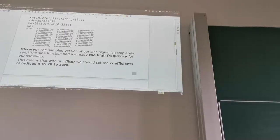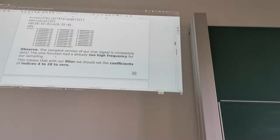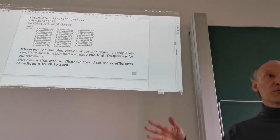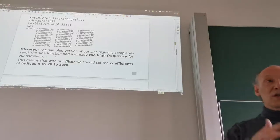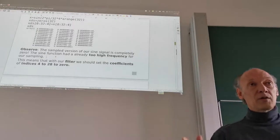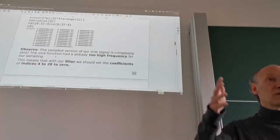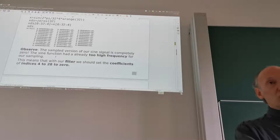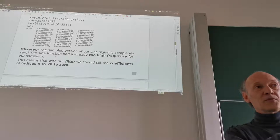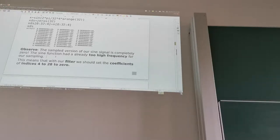The signal frequency was already too high for our new sampling rate because the sinusoid was exactly at the Nyquist frequency for the new sampling rate. The new sampling rate is 8 pixels per line and the sinusoid had 4 periods per line — exactly half the sampling rate. This is exactly the Nyquist frequency, and Nyquist itself is not recoverable — only frequencies strictly up to Nyquist.